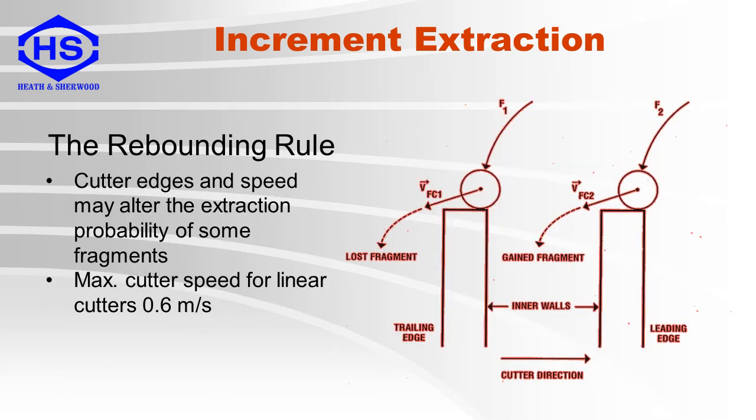For good increment extraction, the cutter should move at a linear speed of less than 0.6 meters per second. Here you can see that some particles are gained and some are lost.